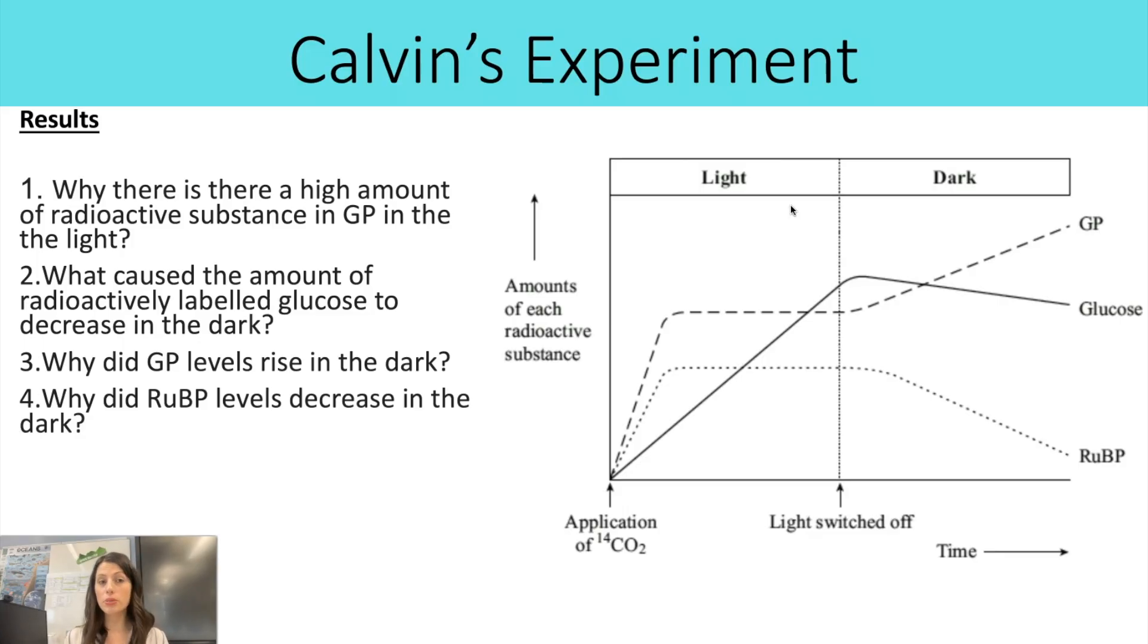So the first common thing you might be asked to explain is why there is a high amount of radioactive substance in GP in the light. Now for that, sometimes it's asked as a comparison to RUBP. And the idea here is thinking about how many carbons each of those compounds contains. So GP is a three carbon compound, but you have two GP molecules within that Calvin cycle. You only have one RUBP and that's a five carbon compound. So you're always going to have a higher amount of radioactivity in GP compared to RUBP because it contains more carbons and it is the carbon that is radioactive.